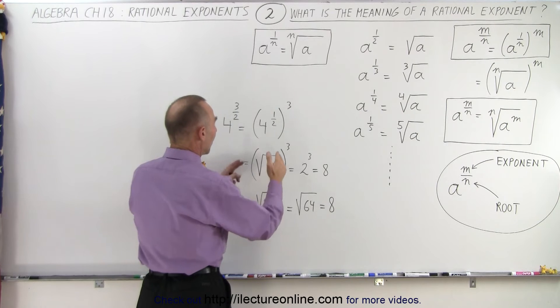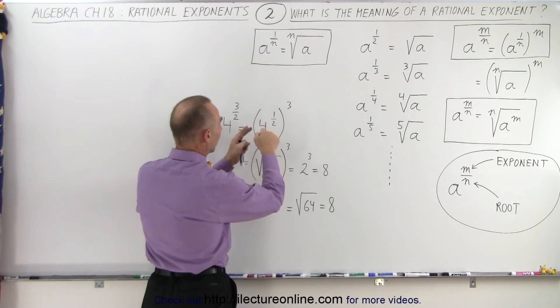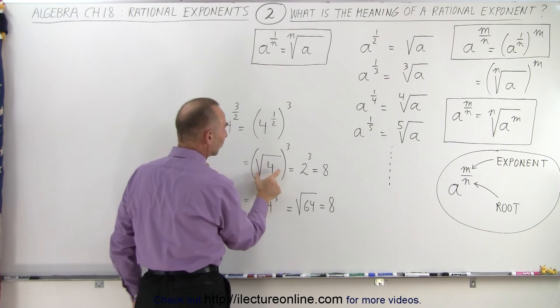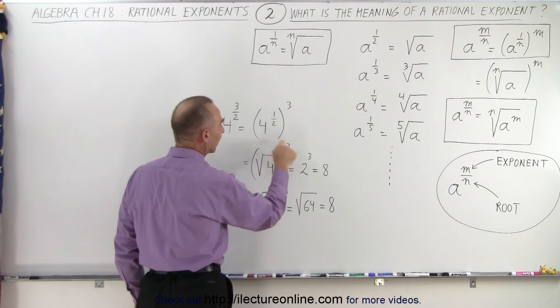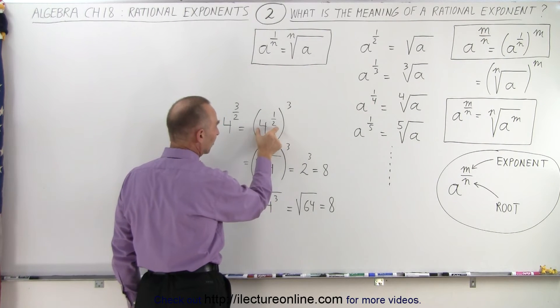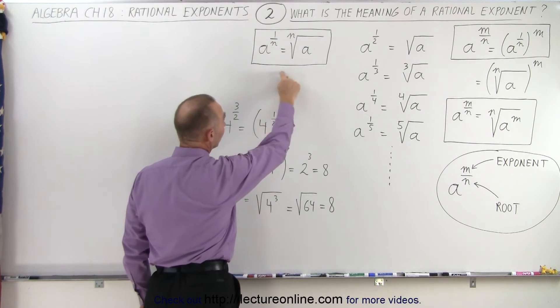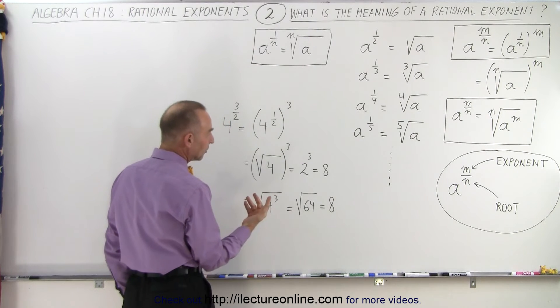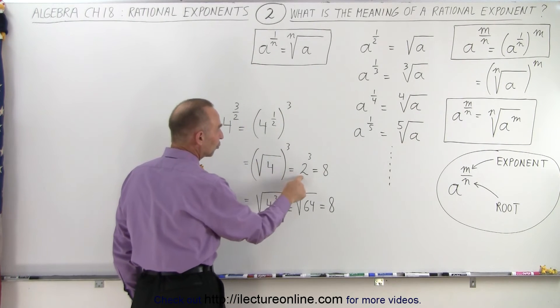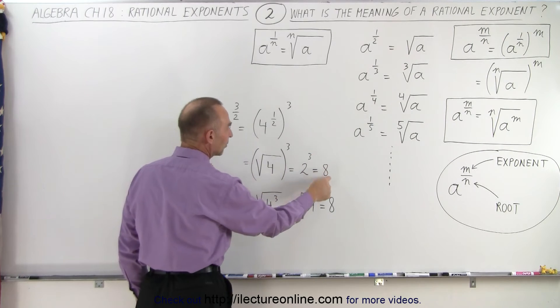where we say we have the 4 to the 1 half power means the square root of 4, and then the whole thing is raised to the third power. So we simply write this like this, based on this rule right here. And then you can see that the square root of 4 is 2. 2 raised to the third power is equal to 8.